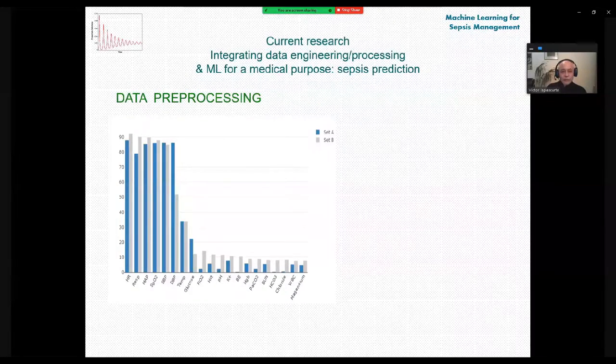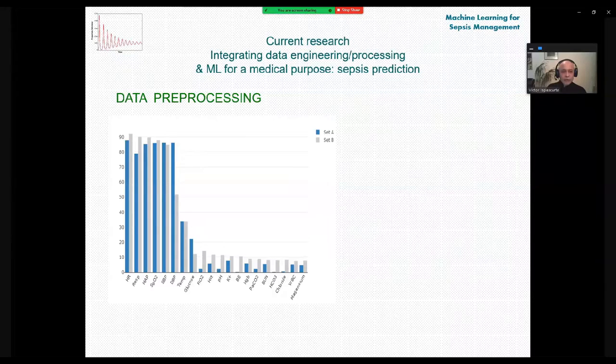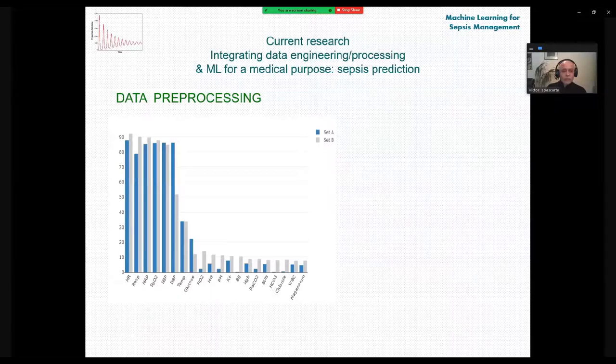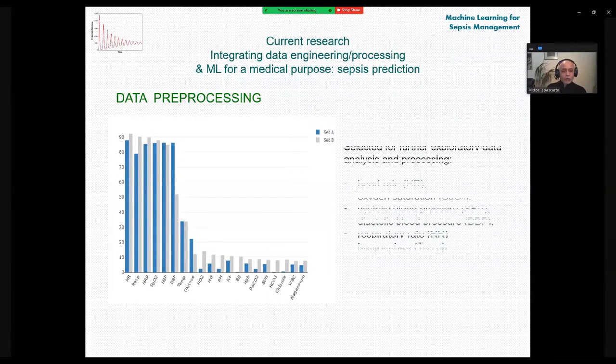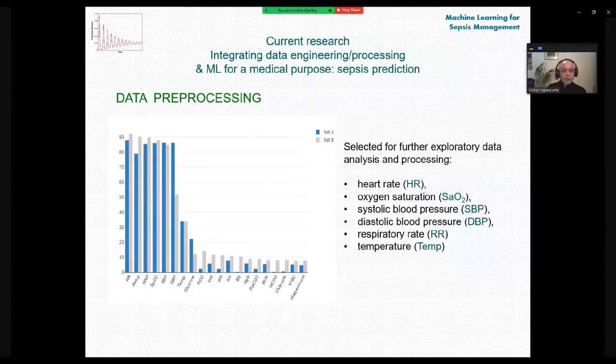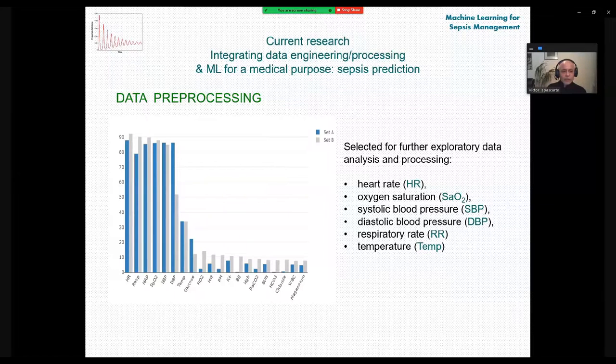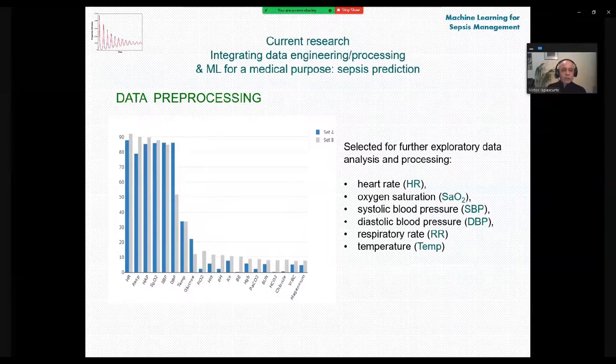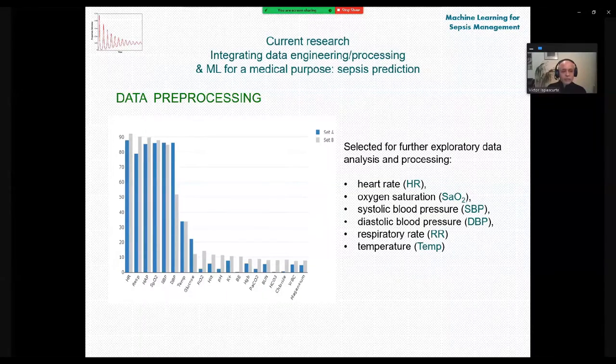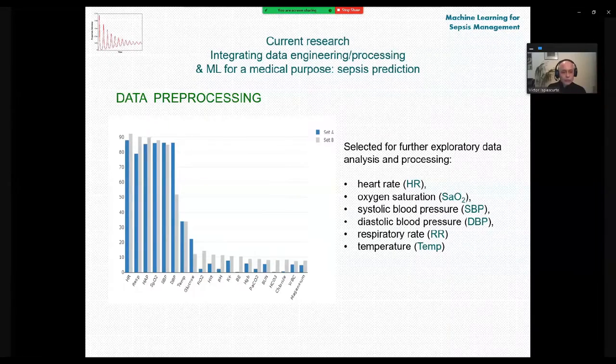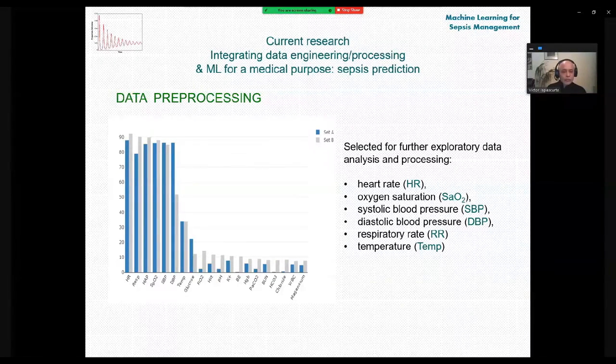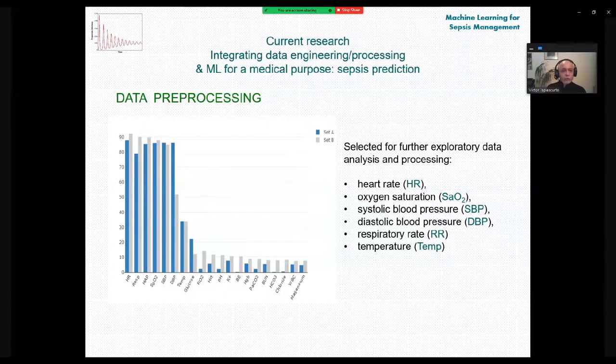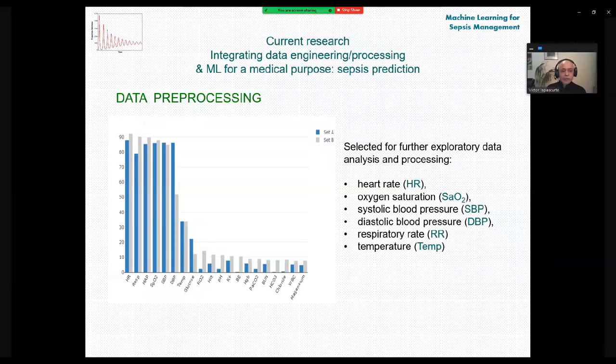Back to the data, we can see that there are many parameters present in the data. Unfortunately, a lot of them are missing, but about this a little bit later. Now, I would like to mention that we were experimenting with different sets of parameters and selected parameters with the highest discriminatory value of sepsis versus non-sepsis. The set presented on the screen, including heart rate, oxygen saturation, systolic blood pressure, diastolic pressure, respiratory rate and temperature. And in fact, the six parameters are routinely available in a modern intensive care unit.